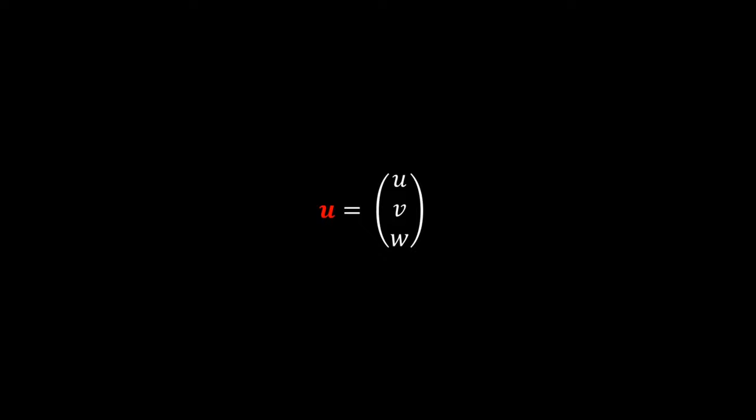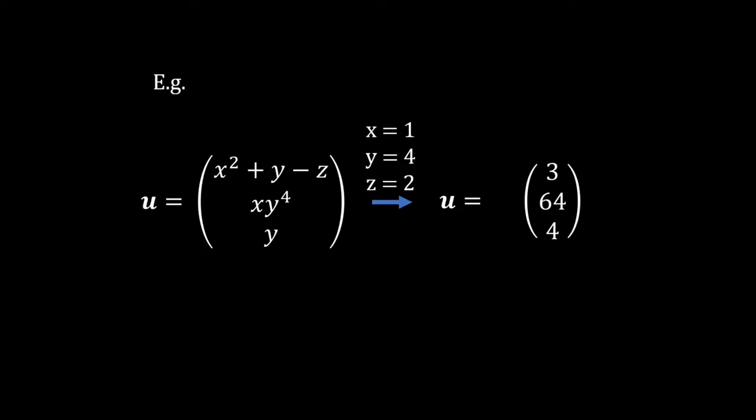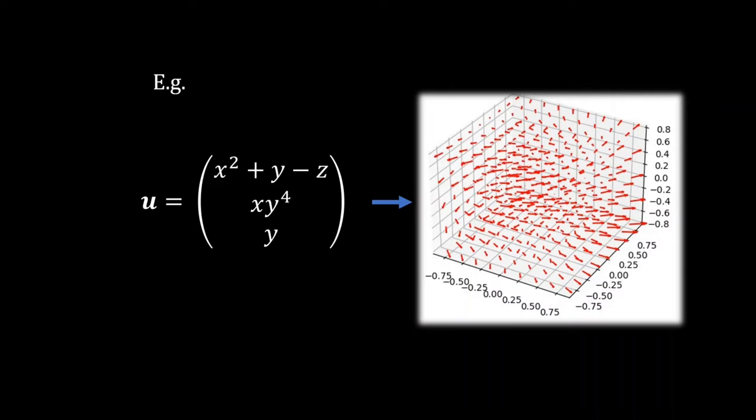It is a vector field where every point in 3D space has a vector associated with it, possessing a varying magnitude and direction. The idea is when we solve Navier-Stokes, we obtain the velocity field so we know how the fluid is moving everywhere in our system.